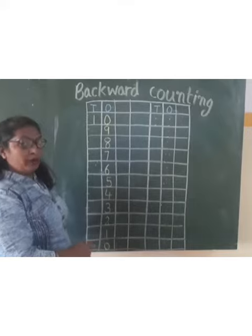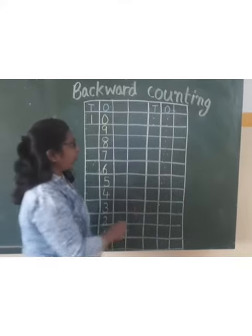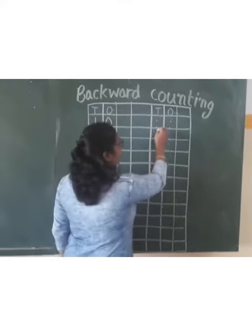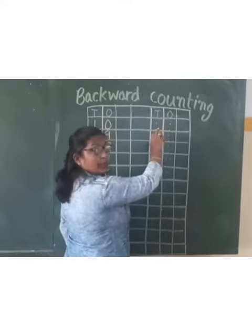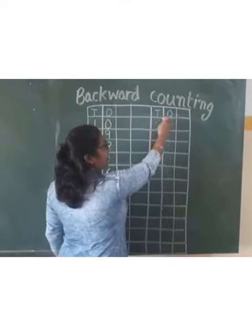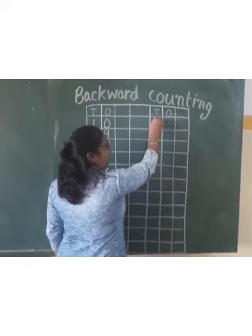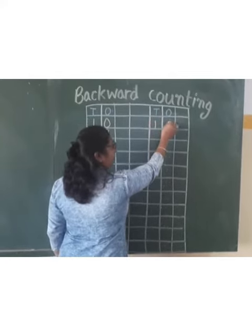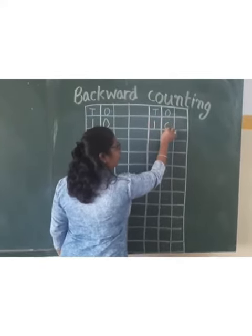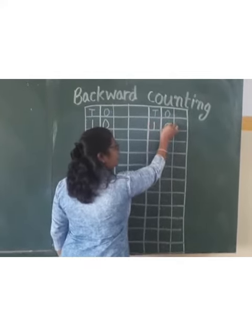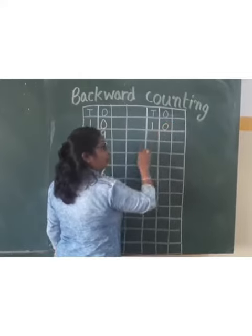now we will write. Now we will write 10. Tell them we will write 1, then 0 — 1, 0, that is 10.